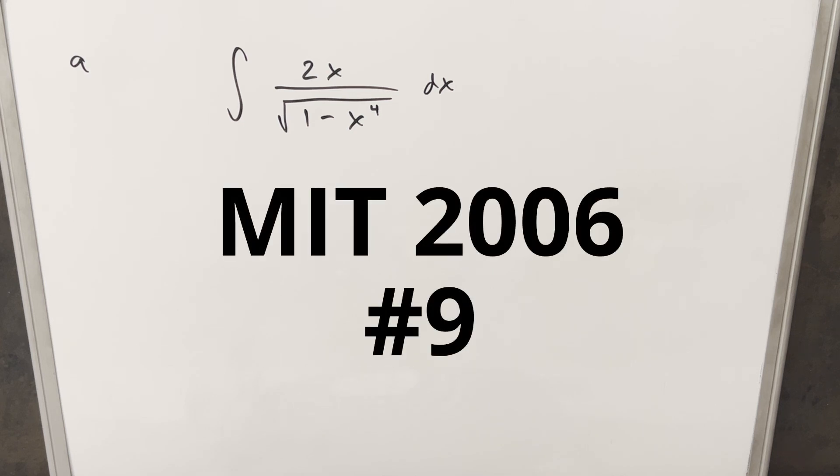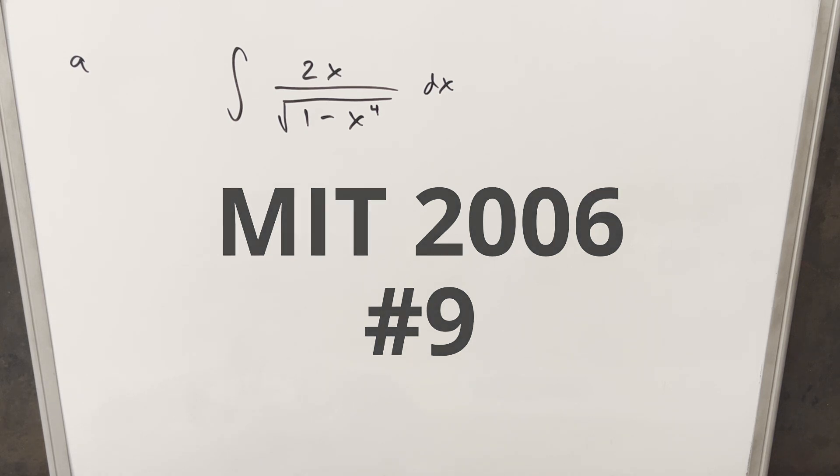We have here another integral from the MIT integration bee 2006, problem 9. The integral of 2x over square root of 1 minus x to the 4th dx.